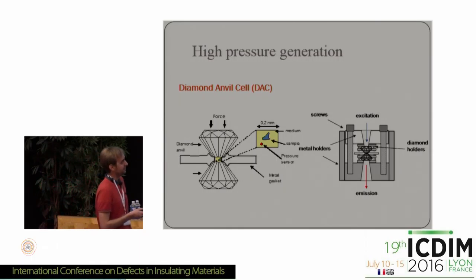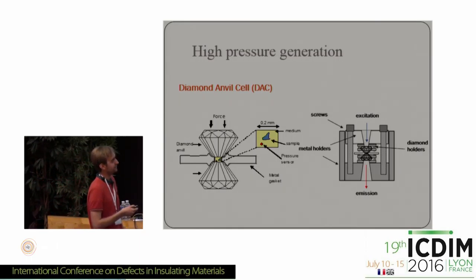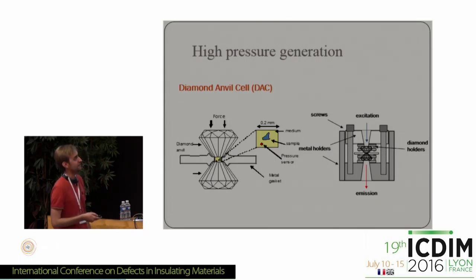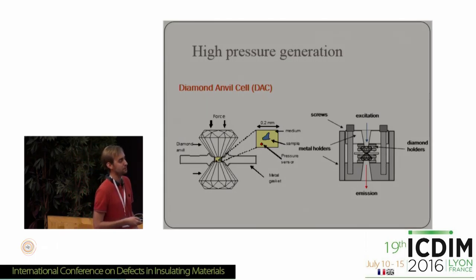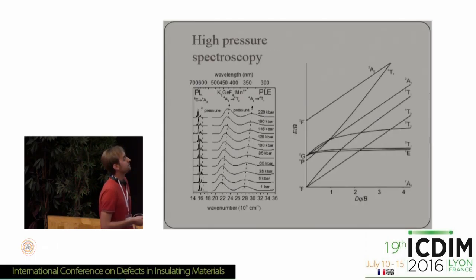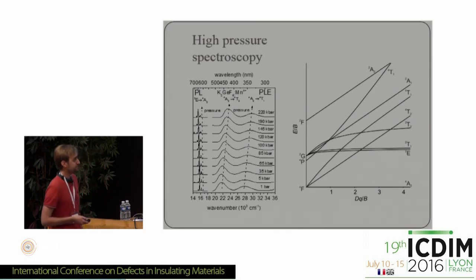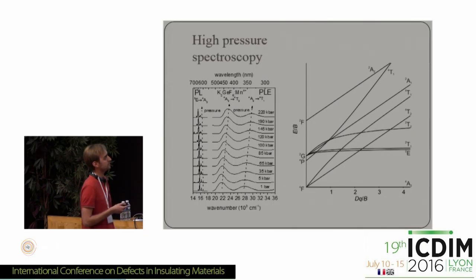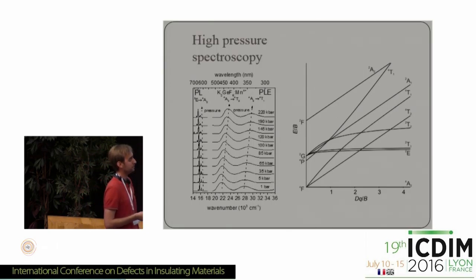We use diamond anvil cells to squeeze the samples inside the pressure chamber, and we can get significant pressures in the range of, for example, 50 kilobars. Looking at the high-pressure results, here we can see the high-pressure shift of photoluminescence and photoluminescence excitation spectra shown on an energy scale.